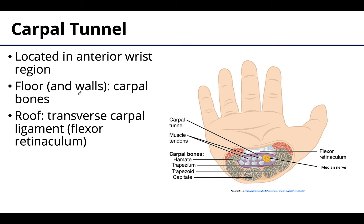The name 'carpal' hints that we should think in the wrist region, likely involving carpal bones — both of which are true. The carpal tunnel is located in the anterior wrist, with the floor created by the carpal bones forming a bowl-like structure, and a ligament forming the roof, creating the tunnel through which things travel. This specific ligament is called the transverse carpal ligament, very often also referred to as the flexor retinaculum — these two terms refer to the same structure.